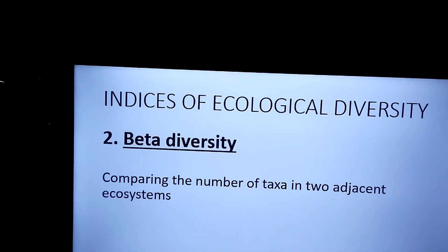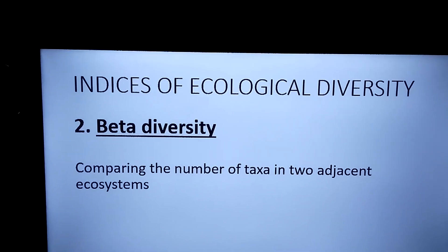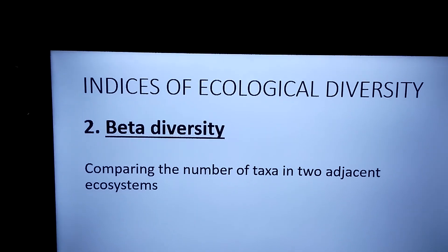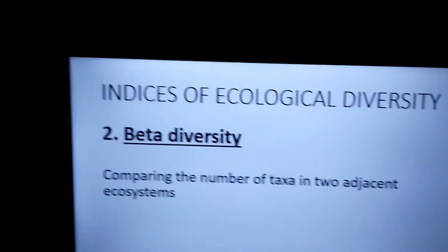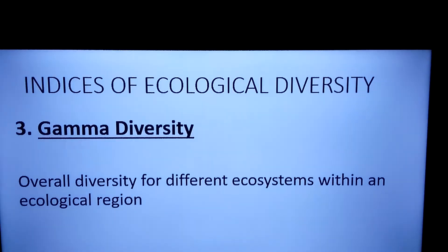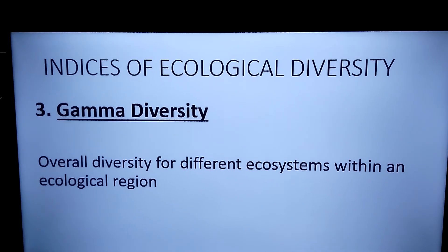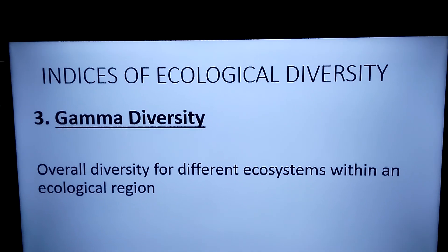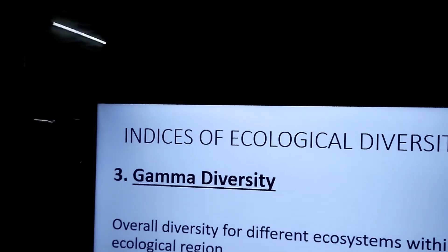The second one is beta diversity, where we compare the number of taxa or species in two adjacent ecosystems — we take two ecosystems and compare the number of species. The third one is gamma diversity, which is the overall diversity for different ecosystems within an ecological region — a large area containing different ecosystems.